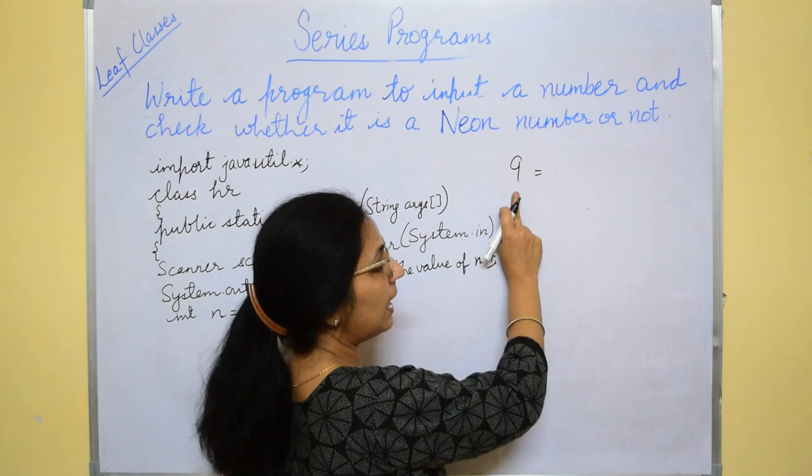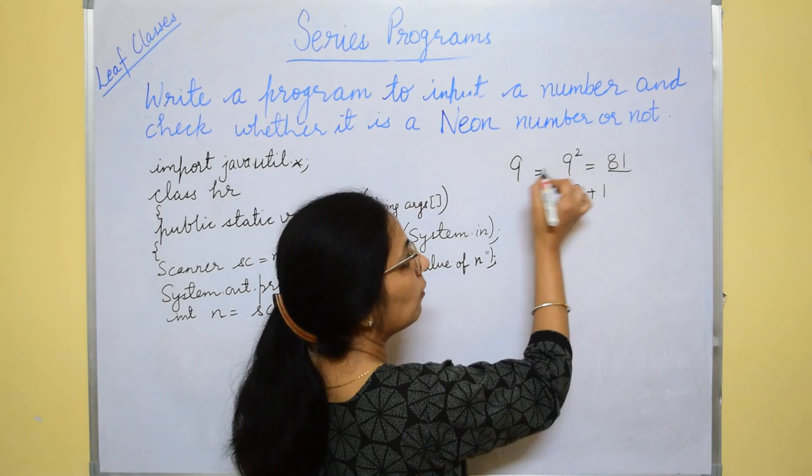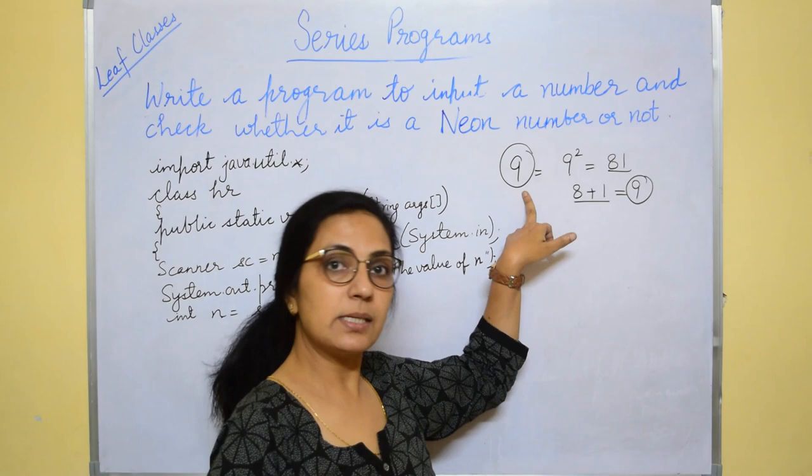Let's check with an example. If I have taken 9, the square of 9 is equals to 81. The sum of the digits of the square of the number is 8 plus 1, that is equals to 9, so which is equal to the entered number. Hence, 9 is a Neon number.